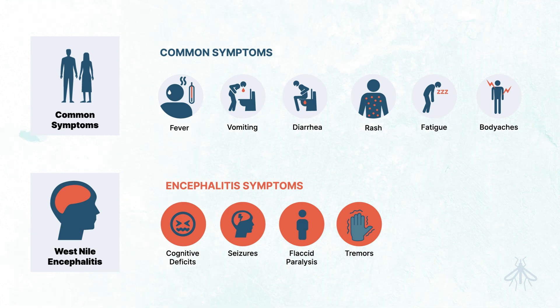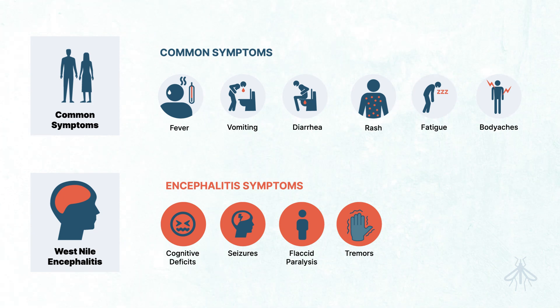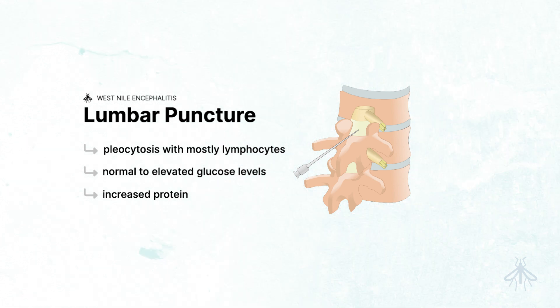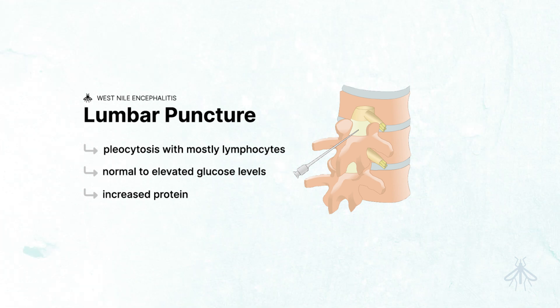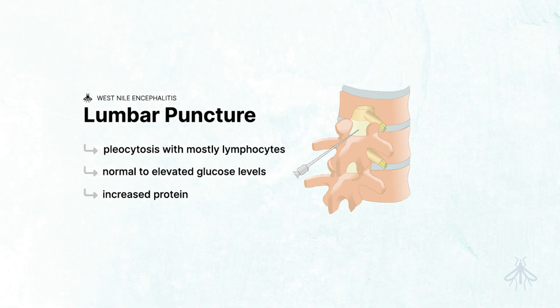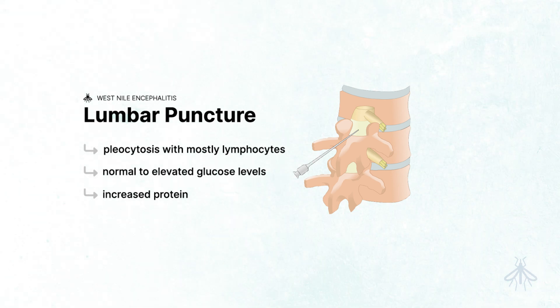Most people will complain of a headache and have a low-grade fever. If a lumbar puncture is performed, such as in cases of meningoencephalitis, these studies will show a pleocytosis with mostly lymphocytes, normal to elevated glucose levels, and an increased protein.